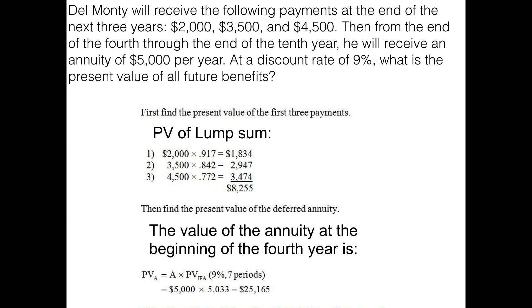The second step is to find the present value of the annuity portion. The value of the annuity at the beginning of the fourth year uses nine percent at seven periods in the present value of an ordinary annuity tables, because the problem tells us payments are made at the end of each year. We take the payment amount of five thousand, multiply it times the factor of approximately 5.033, and we get twenty-five thousand one hundred and sixty-five dollars. This does not answer the question — it simply gives the value of the annuity at the end of year three, or beginning of year four.